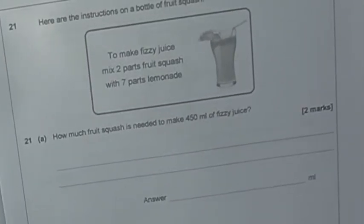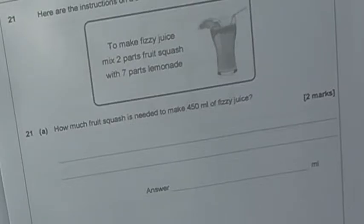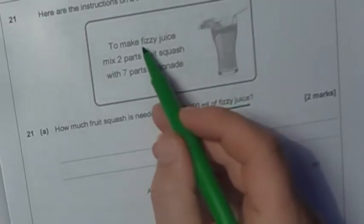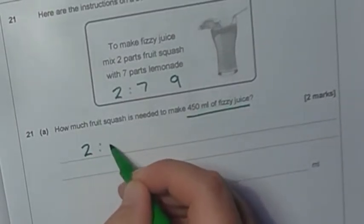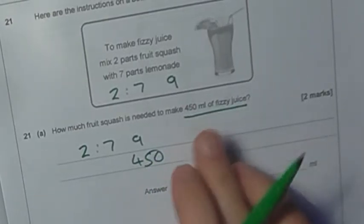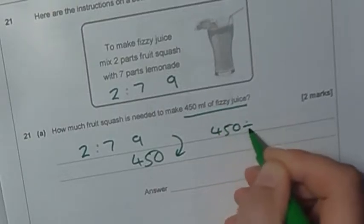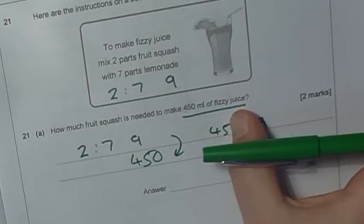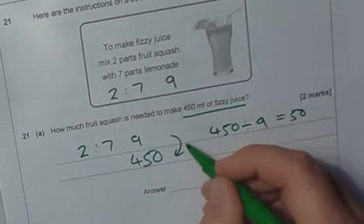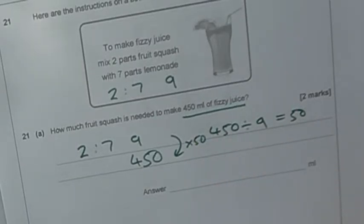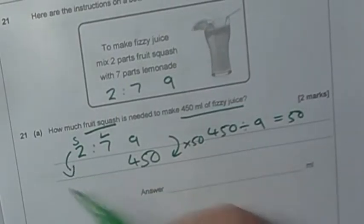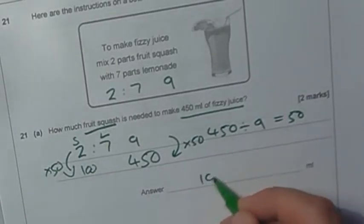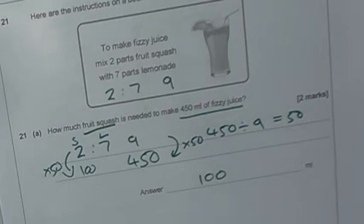Ratio question. Here are the instructions from a bottle of fruit squash. How much fruit is needed to make 450 milliliters of fizzy juice? To make fizzy juice at the minute it's 2 to 7. So that will make 9 parts. So 2 to 7 makes 9. We want 450. 450 divided by 9 would be 50. So we're going to times by 50. It's only asking me how much fruit squash is needed. So this part is the squash, this part is the lemonade. So I only really have to worry about times-ing that by 50. 2 times 50 is 100, so my answer is 100 milliliters of fruit squash.